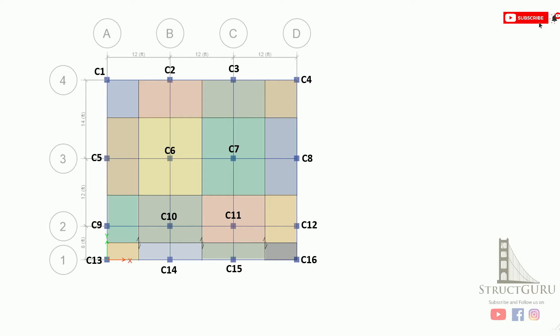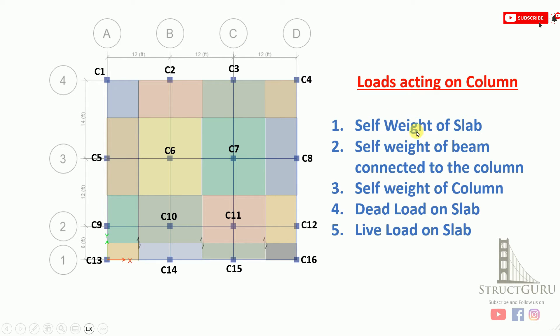Once you categorize the transfer of loads from slab portions to a particular column, we need to understand what sorts of loads are to be transferred. The loads acting on a column will be: self weight of the slab, self weight of the beams connected to that column, self weight of the column itself, dead load on slab, and live load on slab.